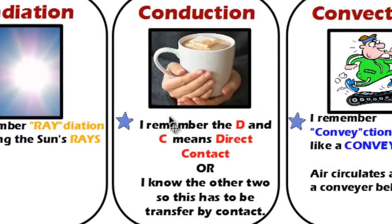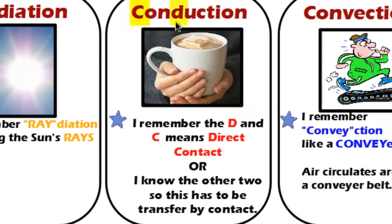In conduction, you have a C and a D, and I always remember them as direct contact or touching. Conduction is when two things are touching each other and heat is getting transferred that way.